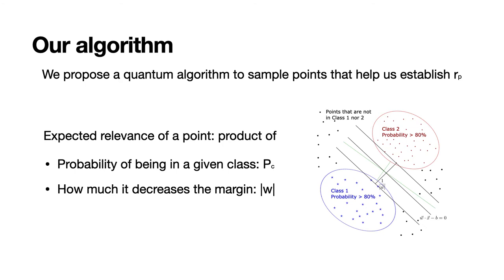To do that, we need the minimum distance between two classes. Our algorithm will generate points that have a high expected value of information, if human classified, and will depend on the probability of a point being in a given class, and the amount it decreases the distance between classes, since what we have is only an upper bound.